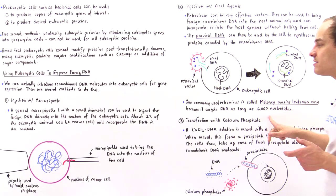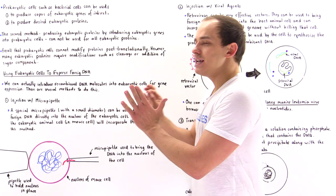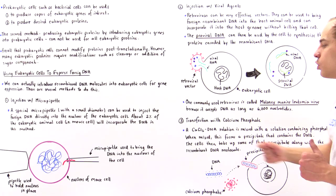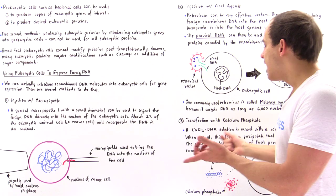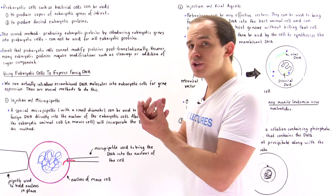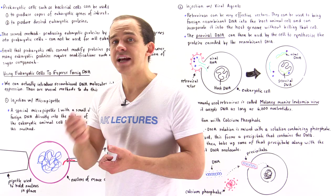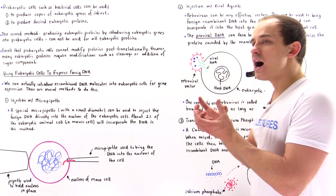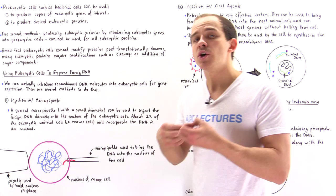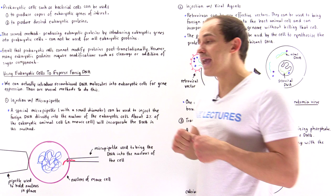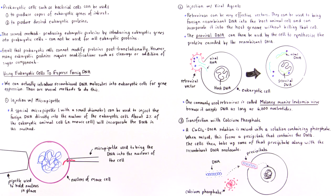The final method is transfection with calcium phosphate — the injection of a DNA molecule without using any viral agent. We create a solution of calcium chloride and DNA, then mix it with a solution containing phosphate ions. Once we mix these two solutions, calcium phosphate forms a precipitate with the DNA molecule. By a mechanism we don't yet fully understand, the cell incorporates that complex — including the DNA — into the cell by some type of endocytotic process. Endocytosis is the receptor-mediated process by which the cell invaginates and takes material into the cytoplasm.